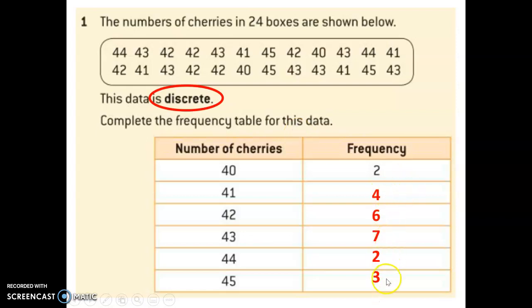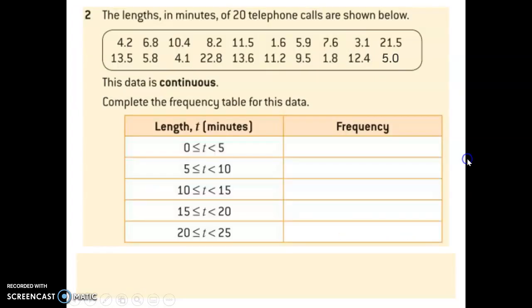Hopefully, you got these numbers here. This table is, in many ways, more useful than just the raw data, because in the table, we can see clearly which things occur more often. For example, we can see 43 cherries and 42 occur more often than the rest.